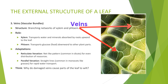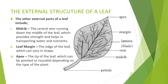The other external parts of a leaf include: 4. Midrib — the central vein running down the middle of the leaf, which provides strength and helps in transporting water and nutrients. 5. Leaf margin — the edge of the leaf, which can vary in shape. 6. Apex — the tip of the leaf, which can be pointed or rounded depending on the type of plant.